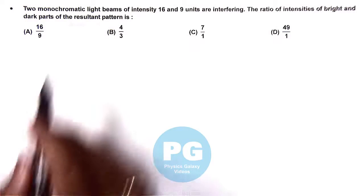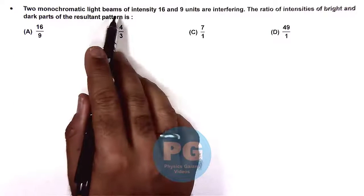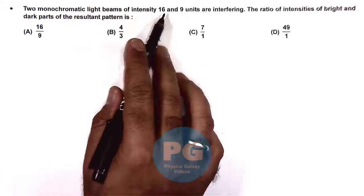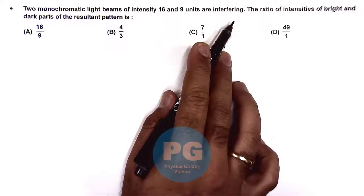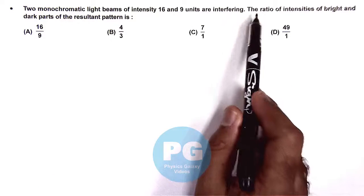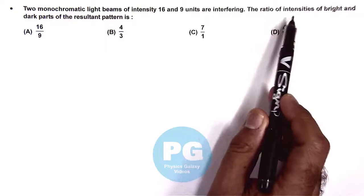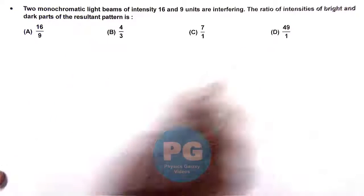In this question, we are given that two monochromatic light beams of intensity 16 and 9 units are interfering, and we are required to calculate the ratio of intensities of bright and dark parts of the resultant pattern.